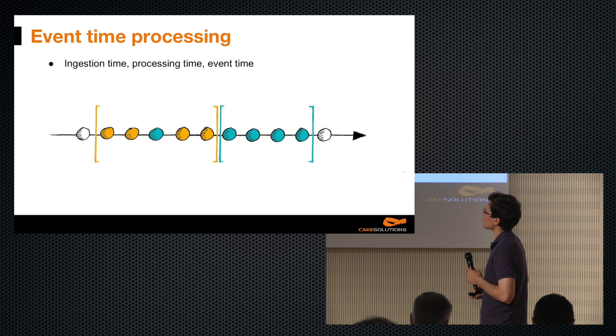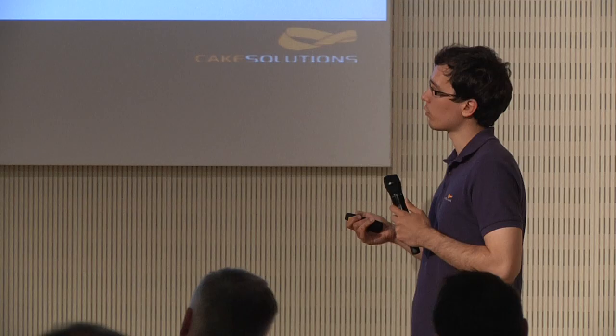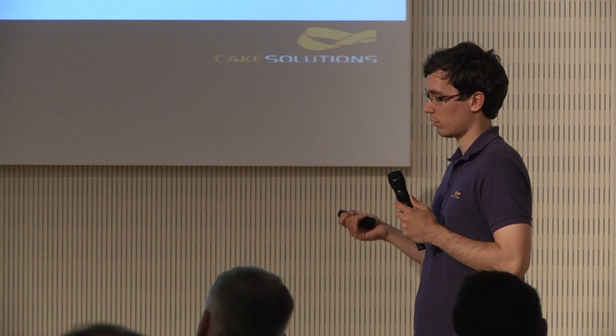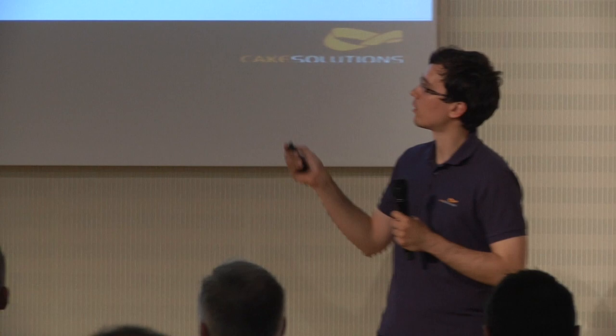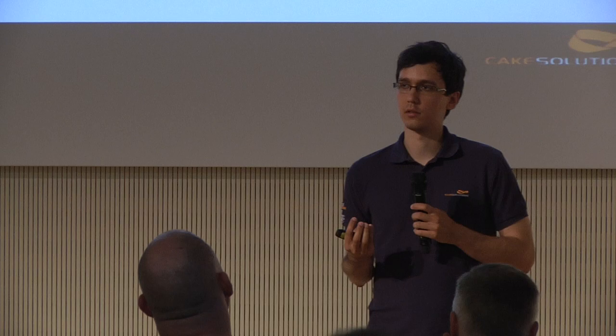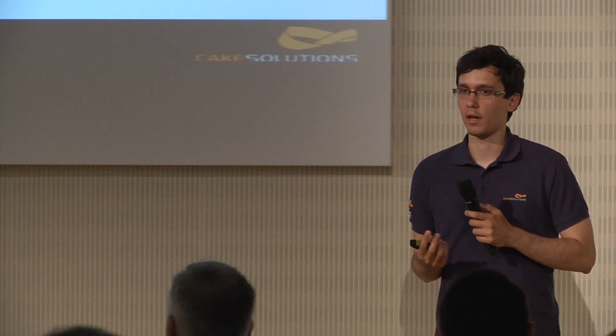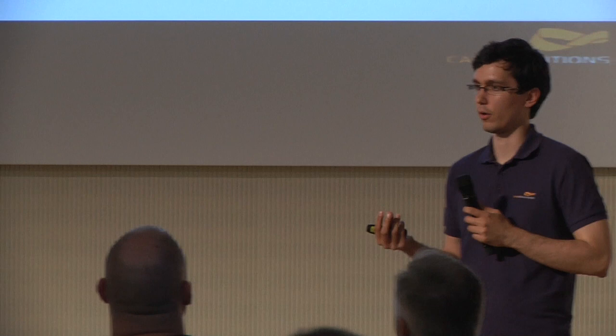I'll talk about some concepts important in stream processing. The first is event time processing. Most stream processing systems such as Spark only use processing time — the time the event is actually being processed in the processing system. But sometimes we want to use event time — the time the event was actually created, or a business time associated with that event. They're not the same, because the event may be delayed for a period of time during the processing pipeline or traveling across the network.